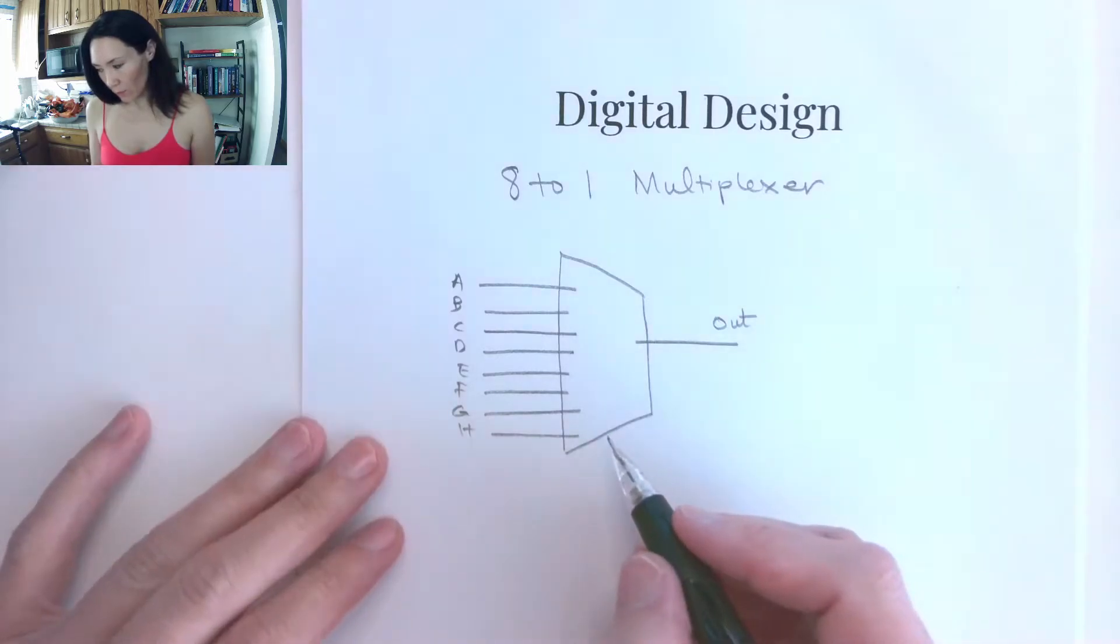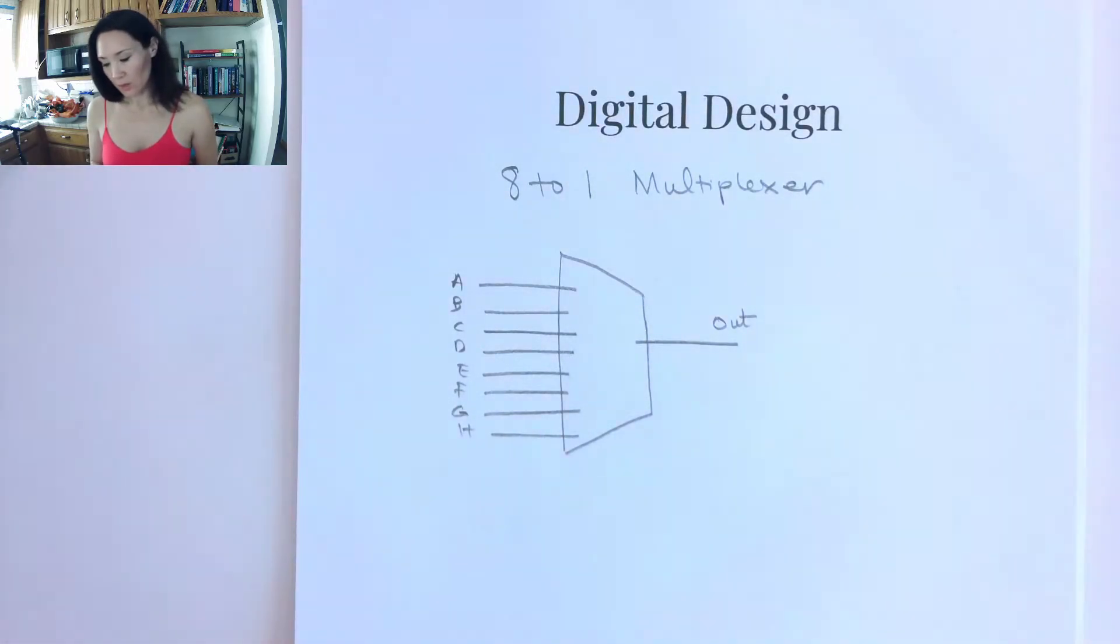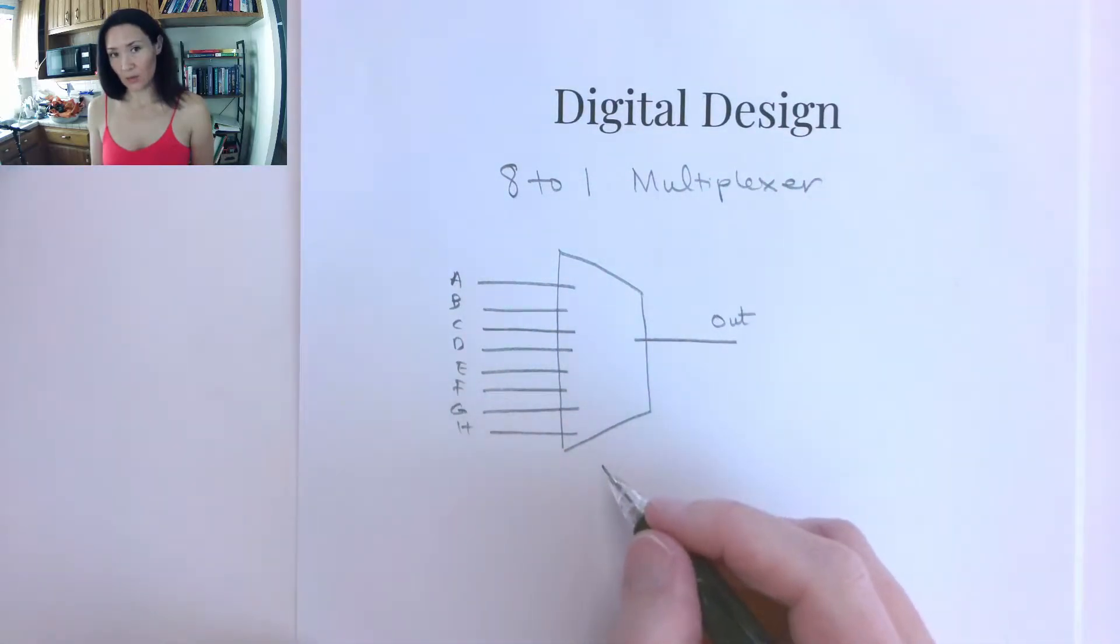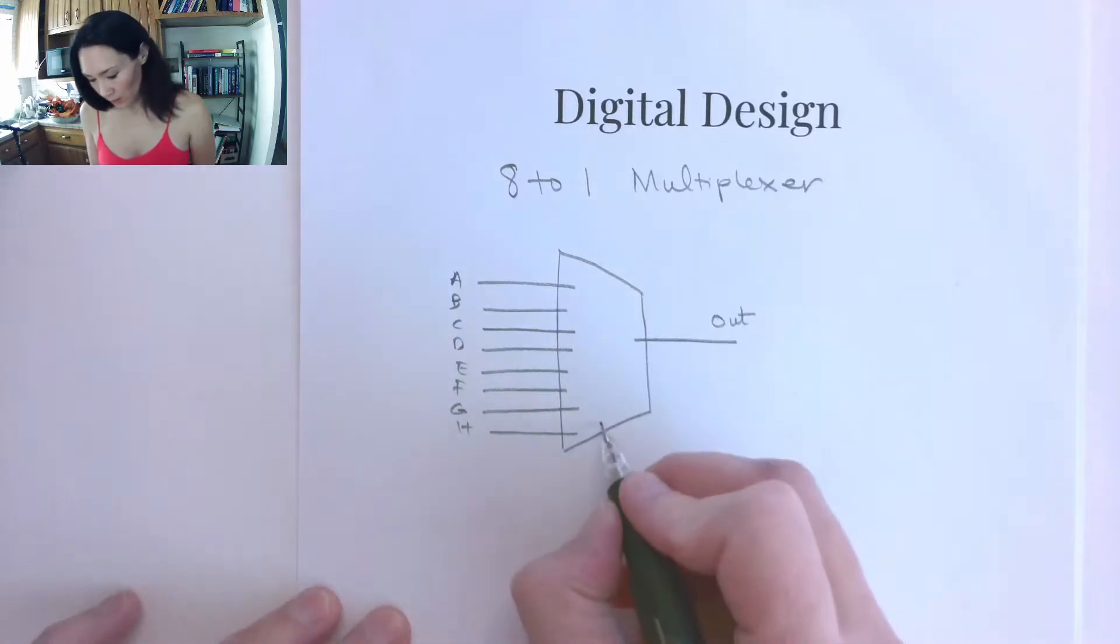Now for the 4-to-1 and the 2-to-1 multiplexers, for the 2-to-1 we had 1 select line coming in here. For the 4-to-1 we had 2. This time we're going to need 3 input select lines.